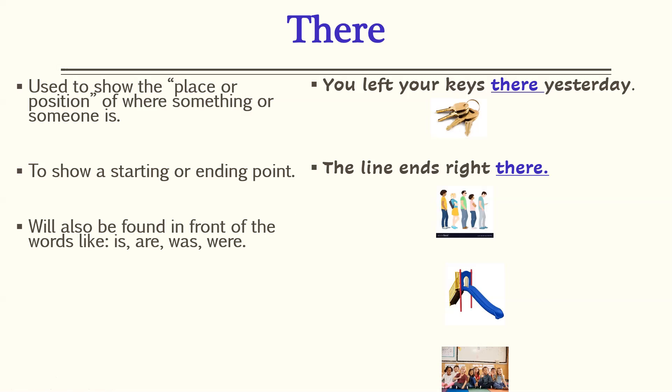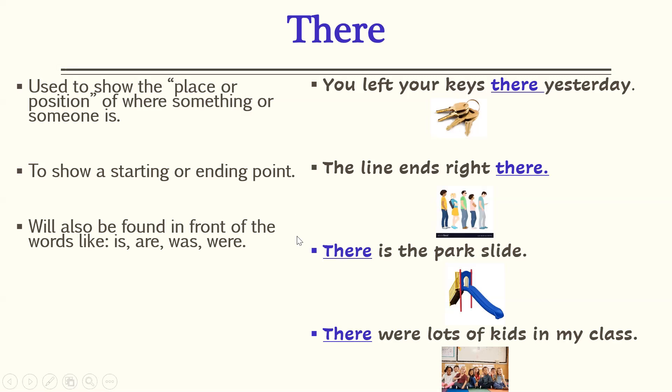This form of there is also found in front of the words is, are, was, and were. For example: 'There is the park slide.' 'There were a lot of kids in my class.'